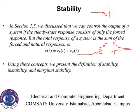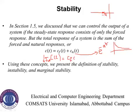Now, if you observe that as t approaches to infinity, the natural response of the system should go to zero. So the system ultimately retains the forced response c_f(t). If I take this in the form of a limit, the limit as t approaches to infinity of c(t) will be equal to c_f(t), because for a stable system the natural term will become zero.